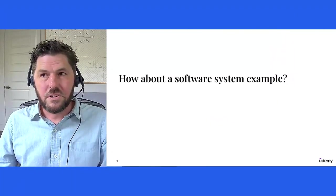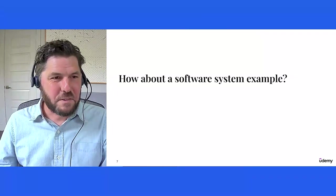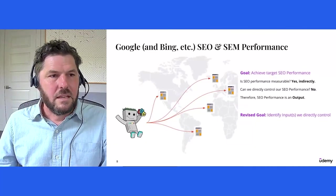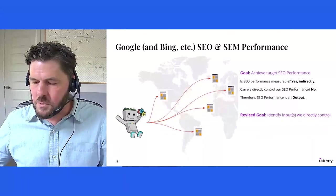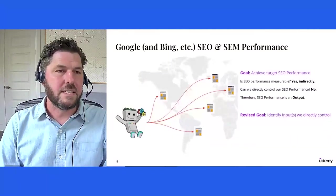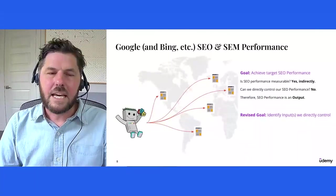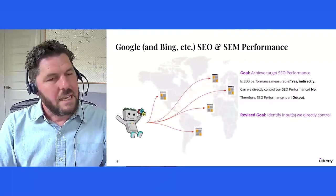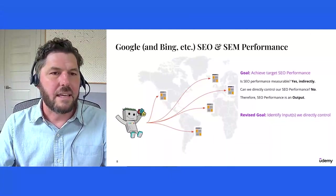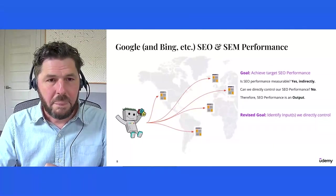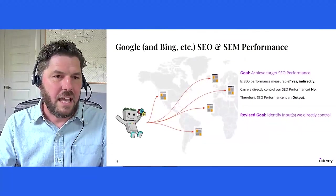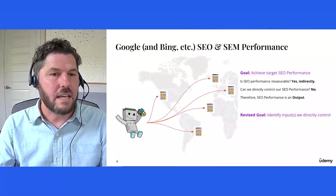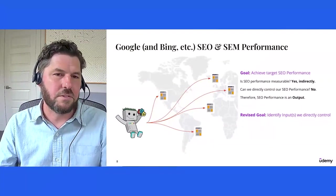More specifically, and outside of my personal hero quest to run through the desert at night with my buddy, let's walk through a software system example of how this can work. So at Udemy, we have a few different lines of business. One of those lines of businesses is a direct-to-consumer transactional marketplace business. And for any company that's doing direct-to-consumer work, SEO and SEM performance is absolutely critical. Google, Bing, and other search engines are constantly adjusting the algorithms that they use to rank and order search results that they return to users.